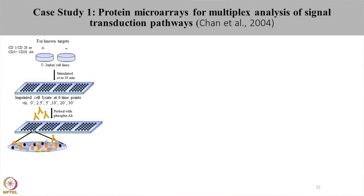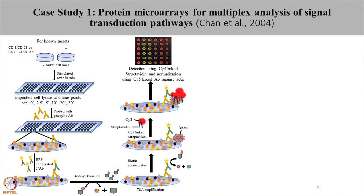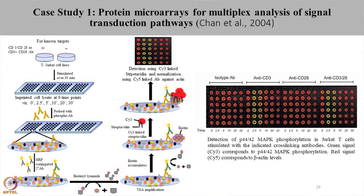These cell lysates were then probed with phosphoantibodies to look for the phosphorylation status. The slides were incubated with HRP conjugated secondary antibodies. Tyramide amplification was further performed in which HRP catalyzes accumulation of biotinylated tyramide. This biotinylated tyramide was further detected using streptavidin labelled with PSI-3. Simultaneously, these arrays were also probed with PSI-5 linked antibodies to detect the level of actin in the cell lysates. In the array image, the red spots show the actin level whereas the green spots show the phosphorylation status of the cells. This is one of the subarrays where the phosphorylation of MAPK was studied.